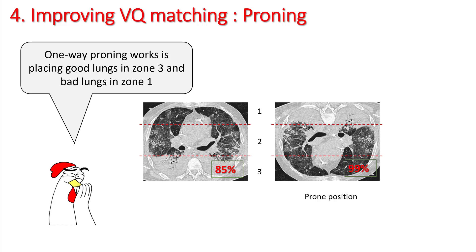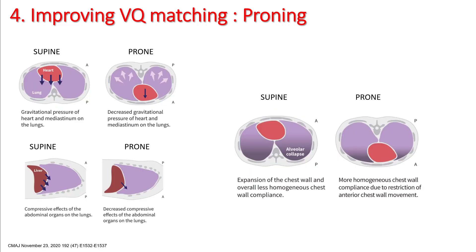In ARDS, because of gravity, there is more dependent atelectasis and consolidation while the anterior part of the lungs is more clear. If you put these patients in prone position, you are putting the good lung zones in zone 3 and the bad lungs in zone 1, which improves oxygenation. However, proning works in multiple other ways as well, such as decreasing gravitational pressure from the heart and abdominal contents, and producing more homogeneous chest wall compliance due to restriction of anterior chest wall movement. We will discuss proning in detail in another lecture.